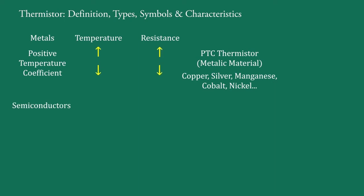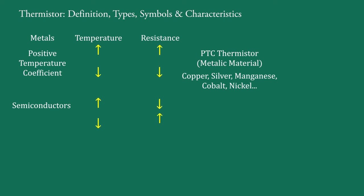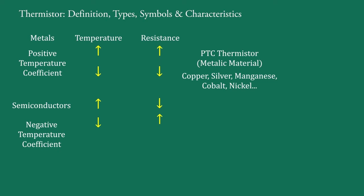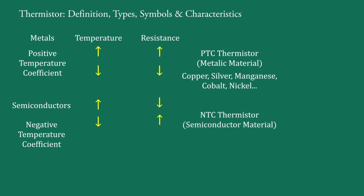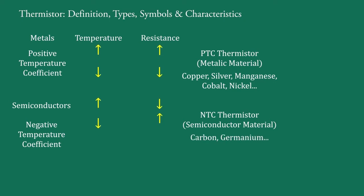In semiconductors, if temperature increases the resistance decreases, and if temperature decreases the resistance increases. This means semiconductors have a negative temperature coefficient. So in NTC thermistors, a semiconductor material is used, such as carbon, germanium, etc.